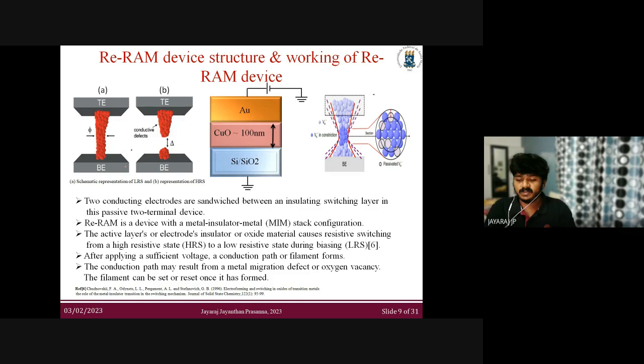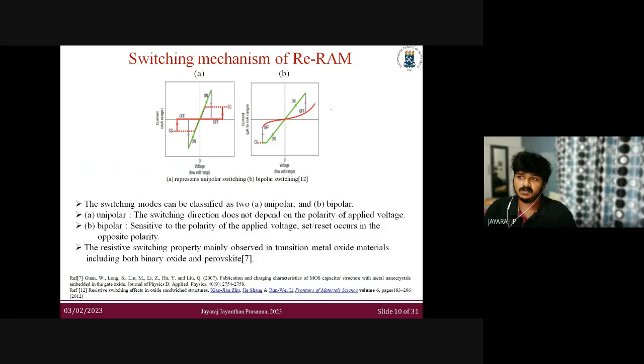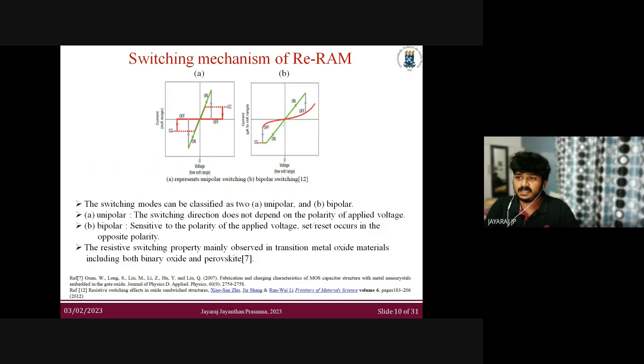The switching mechanism of RERAM can be classified into two types: unipolar and bipolar. In unipolar switching, the switching direction does not depend on the polarity of the applied voltage. In bipolar switching, it is sensitive to the polarity of the applied voltage — the set and reset occur at opposite polarities, happening in the first and third quadrants of the I-V curve.